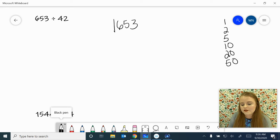653 is our dividend divided by 42 is our divisor. Okay, go ahead, draw your nice long line down that's going to separate your problem from your friendly numbers, and let's start thinking about a friendly number.